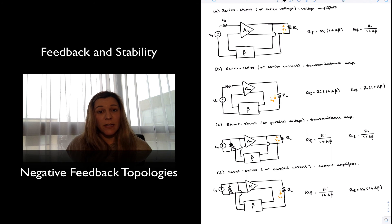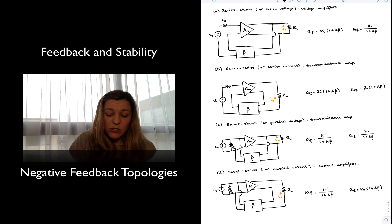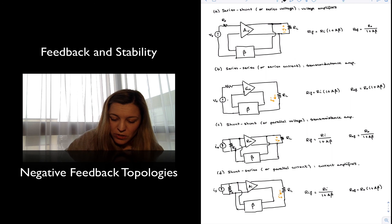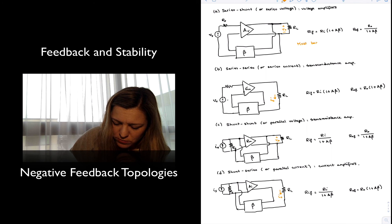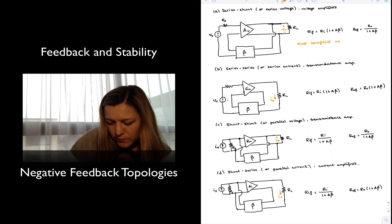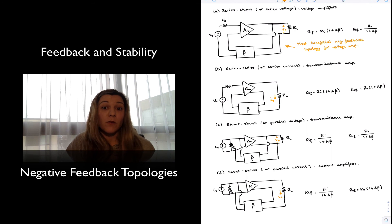So basically, those are all the types of topologies for negative feedback. The one we are going to be most interested in, as we are designing voltage amplifiers, is going to be the series-shunt or series-voltage configuration. This is the most beneficial negative feedback topology for voltage amplifiers, and so it's the one we will typically encounter and design our circuits around. Thank you.